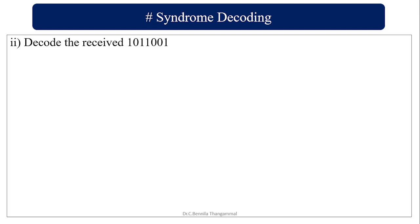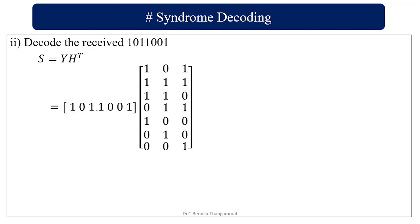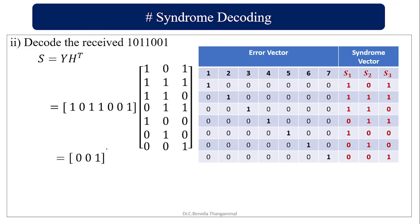Next, we decode the received data. The received vector Y is given, and we compute S equals Y · H transpose. Y is [1, 0, 1, 1, 0, 0, 1]. Multiplying Y by H transpose column by column: first column gives 0, second column gives 0, third column gives 1. So the syndrome is [0, 0, 1].